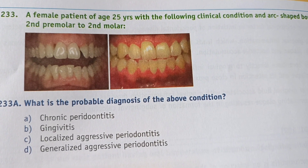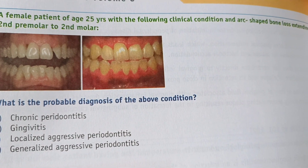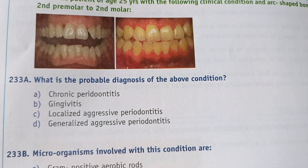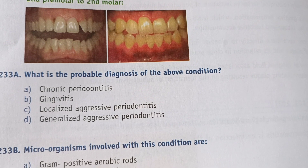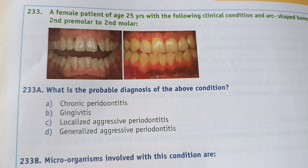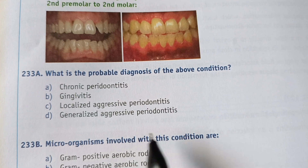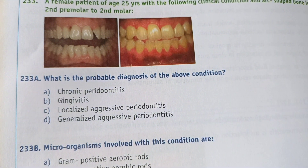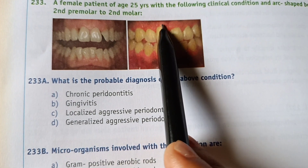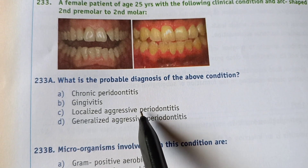The first question: a female patient aged 25 years with arc-shaped bone loss extending from the second premolar to the second molar. What is the probable diagnosis? Options are: A) chronic periodontitis, B) gingivitis, C) localized aggressive periodontitis, D) generalized aggressive periodontitis. The condition involves second premolar to second molar, so the right answer is option C, localized aggressive periodontitis.